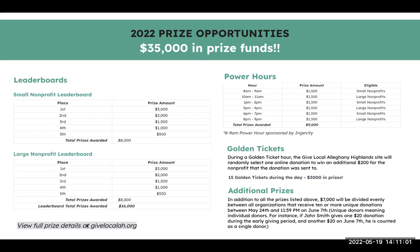To make sure that absolutely every nonprofit that participates gets at least some prize money, we have a prize pool of $7,000 that will be evenly divided between every organization that receives at least 10 donations on GiveLocalAH.org during the entire event from May 24th through June 7th. Last year, 11 organizations received at least 10 donations, and each got about $318 from the Allegheny Foundation just for participating. There's a lot more information on the prize page at GiveLocalAH.org.